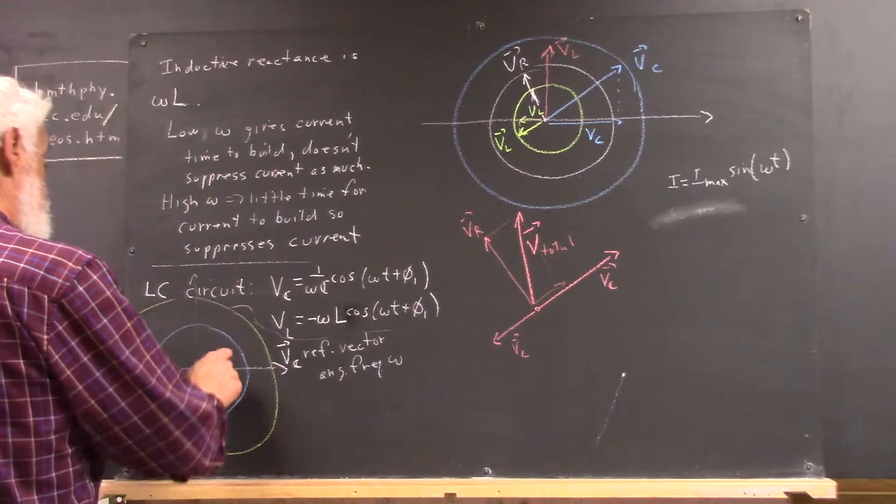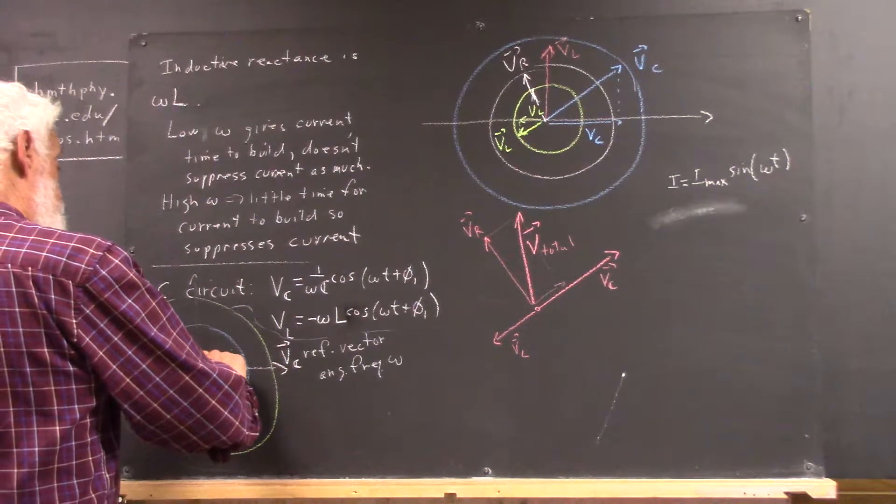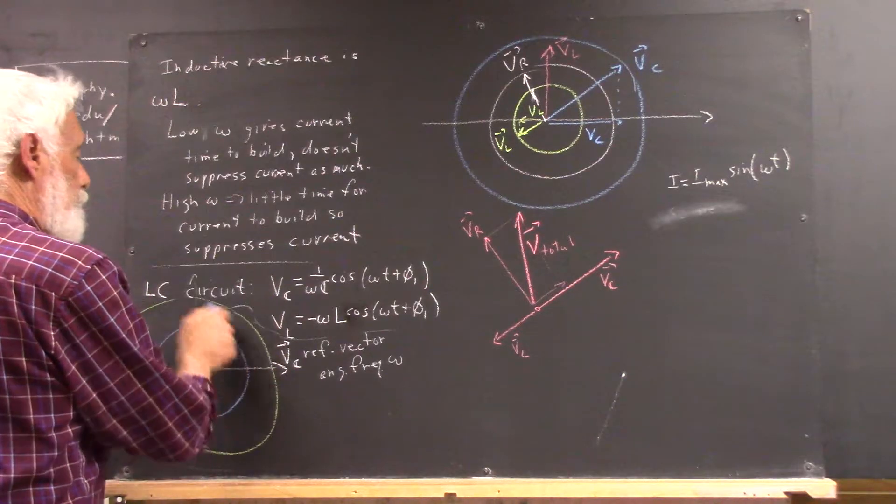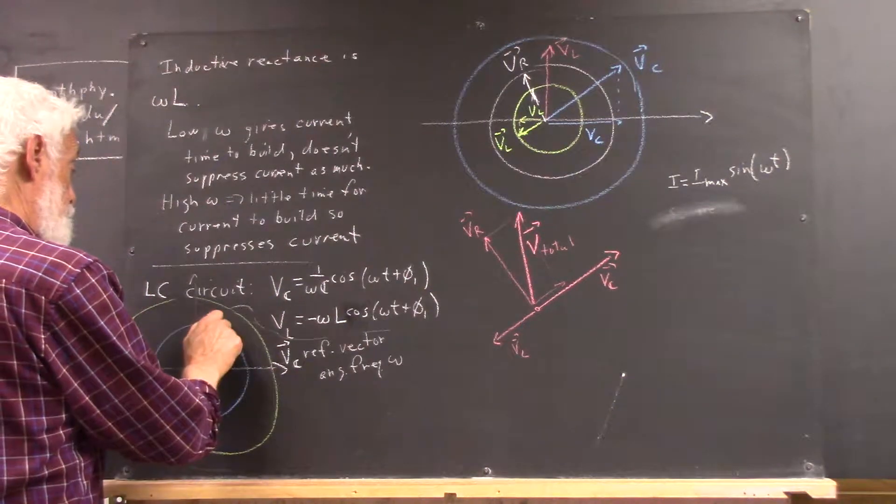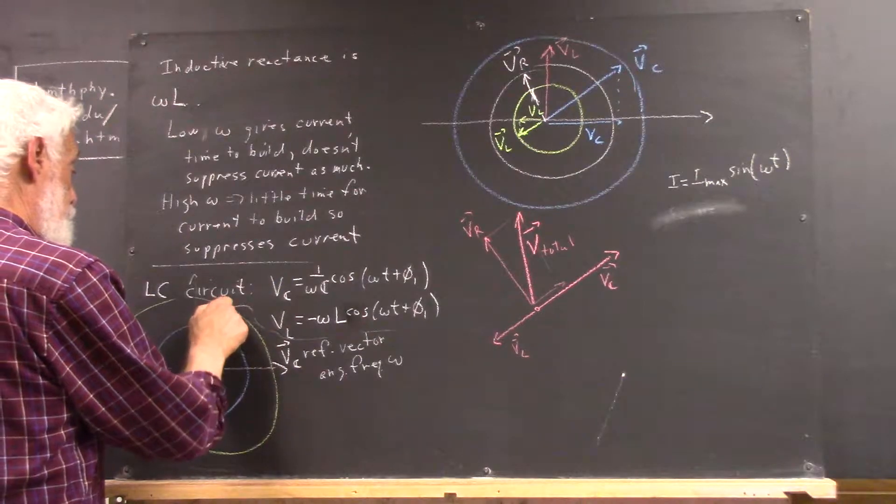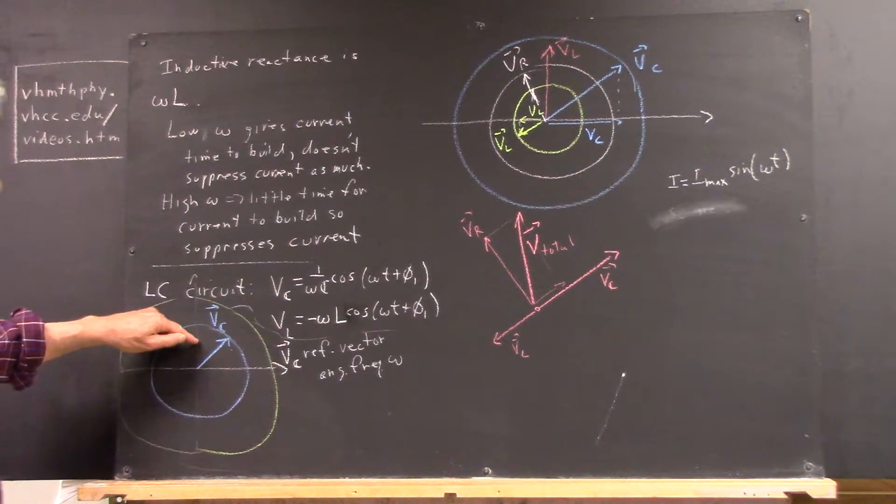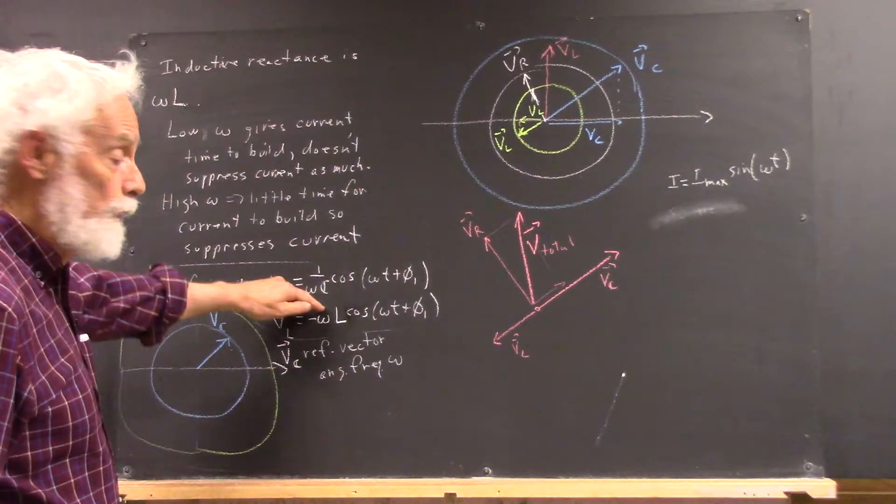What do we do? We say, okay, well, capacitor voltage we're going to represent on the circle, on the unit circle, not a unit circle, it's actually a circle whose radius is 1 over omega C.